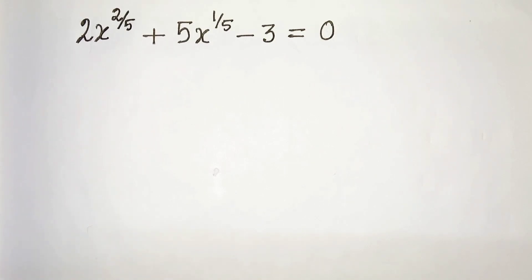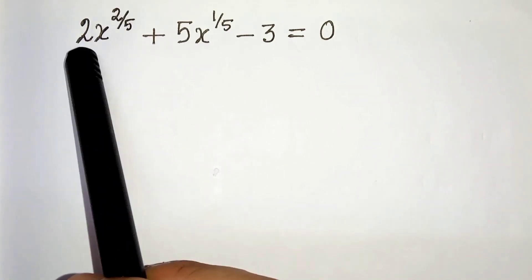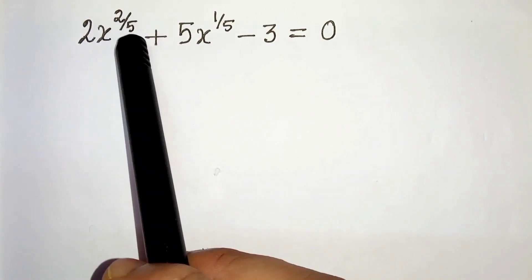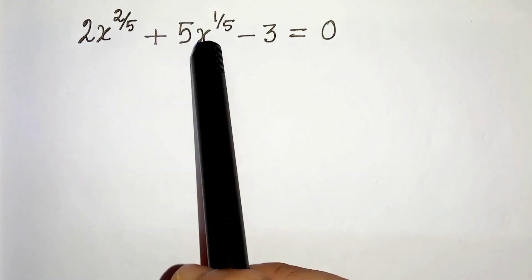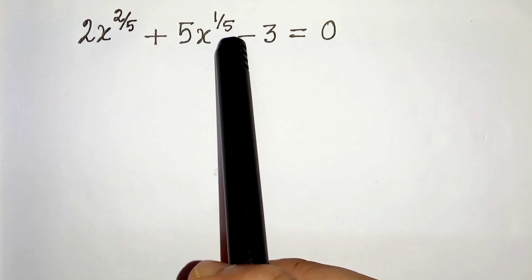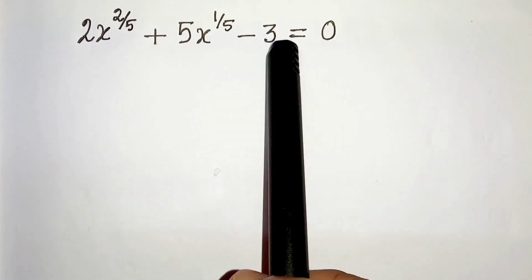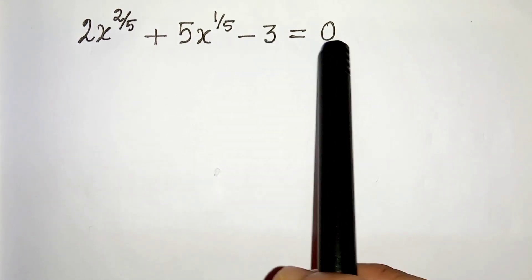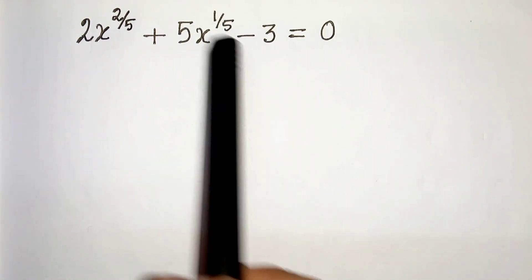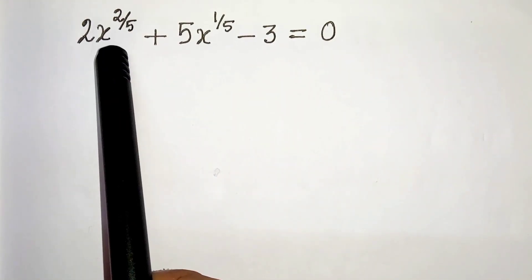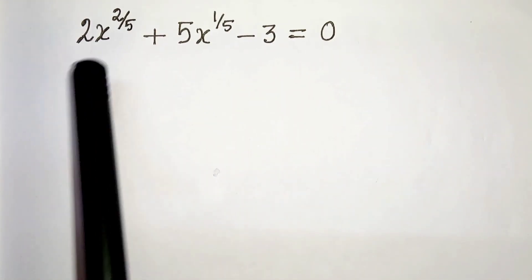Hello everyone. In this video we have 2x to the power 2 by 5 plus 5x to the power 1 by 5 minus 3 equals to 0. We have to solve for x, so let's start.